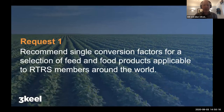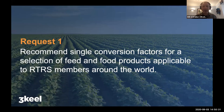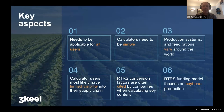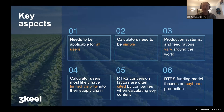RTRS approached us last year to recommend and review existing conversion factors available in the world for feed and food products that would be applicable for companies regardless of where they are in the world or the specific production system they're part of. In doing that, we had to take account of several issues: the factor needed to be applicable for everyone — not just an Argentinian producer of chicken or a French producer of chicken — one factor that everybody is able to use, so how could we find something globally applicable? The calculator itself also needs to be really simple.